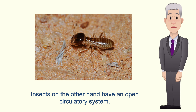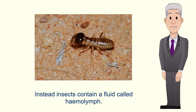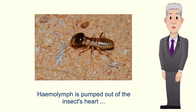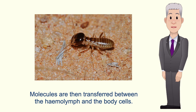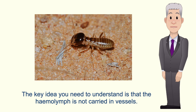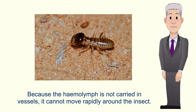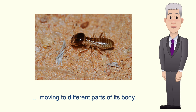Insects, on the other hand, have an open circulatory system. Insects do not contain blood. Instead, insects contain a fluid called haemolymph. Haemolymph carries nutrients such as sugars but it does not carry oxygen. Haemolymph is pumped out of the insect's heart and passes directly into the body cavity, which is called the haemocele. Molecules are then transferred between the haemolymph and the body cells, and the haemolymph then makes its way back into the heart. The key idea is that haemolymph is not carried in vessels, so this is an example of an open circulatory system. Because the haemolymph is not carried in vessels it cannot move rapidly around the insect, and the insect cannot easily change the amount of haemolymph moving to different parts of its body.